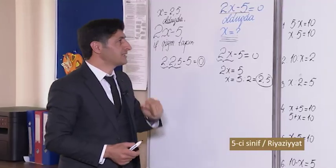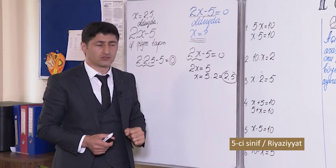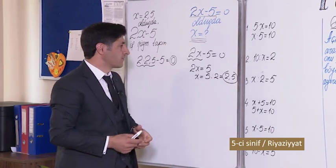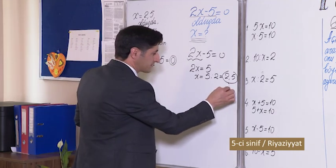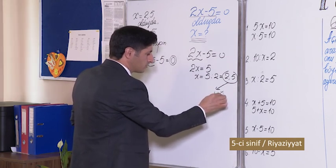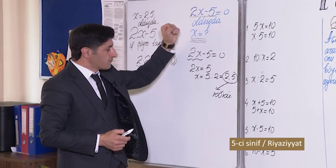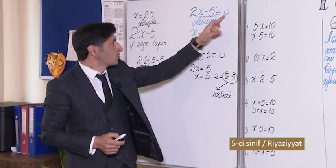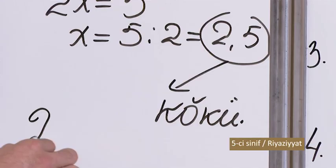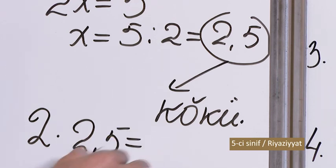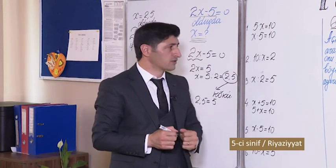Dəyişənin tənliyi doğru bərabərliyə çevirən qiymətinin tapılması prosesi tənliyin həllidir, tapdığımız cavaba isə tənliyin kökü deyilir. Dəyişənin mümkün qiymətlərindən tənliyi doğru bərabərliyə çevirən ədədə tənliyin kökü deyilir. Biz artıq tənlik anlayışını öyrəndik.